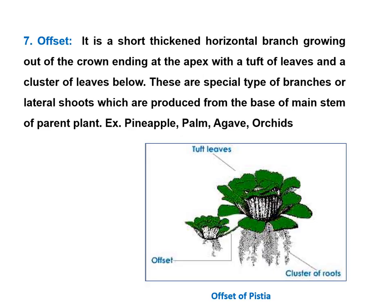An offset is a short thickened horizontal branch growing out of the crown, ending at the apex with a tuft of leaves and a cluster of leaves below. These are special types of branches or lateral shoots produced from the base of the main stem of the parent plant. Examples of offsets are Gasteria, pineapple, palm, agave, orchids, etc.